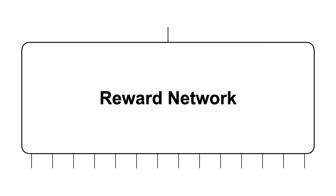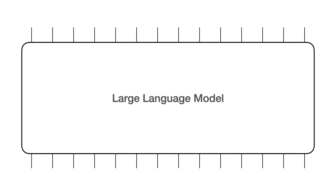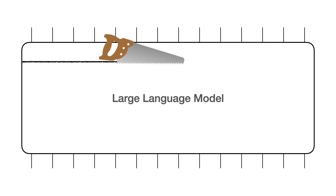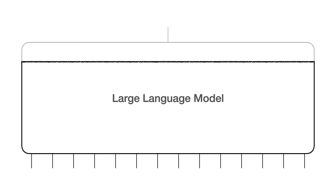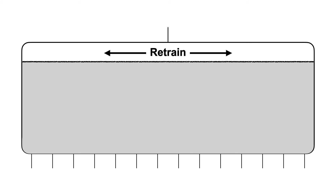You'll notice our reward network looks a lot like an LLM. In fact, it's just an LLM with the top chopped off and replaced with a single scalar output. And to save time, you can freeze most of the network and retrain just the new part at the top. This allows the reward model to inherit an understanding of language without learning it from scratch.